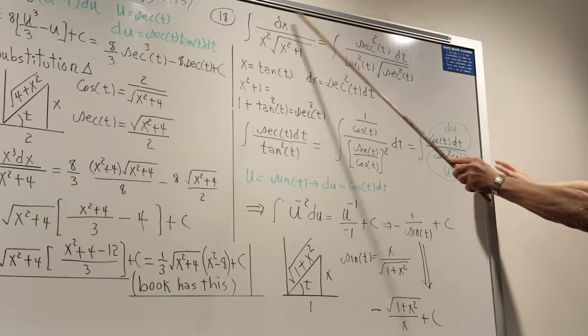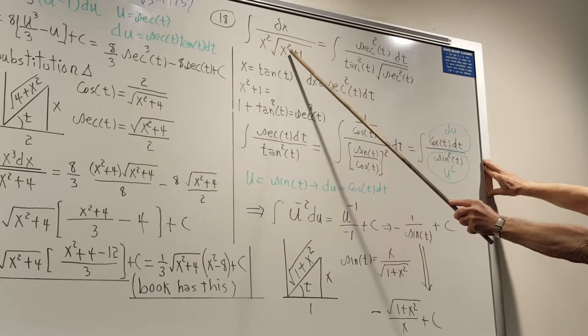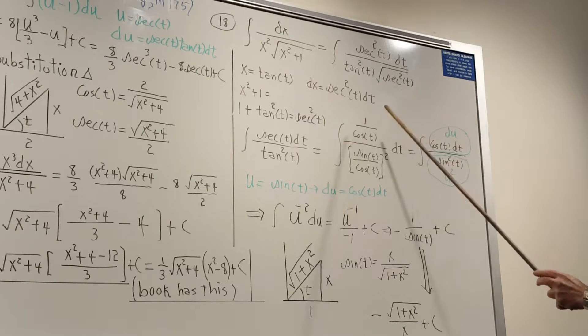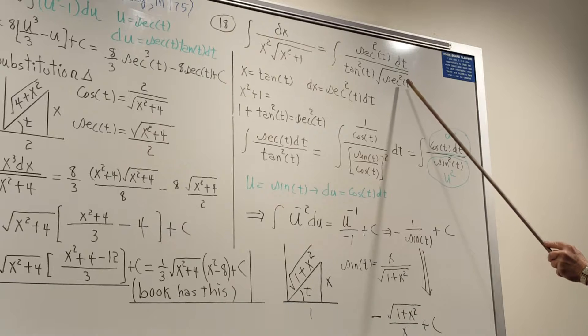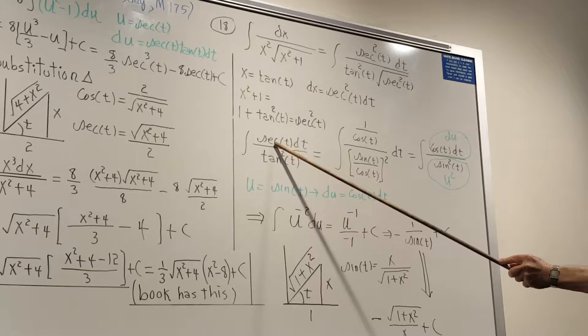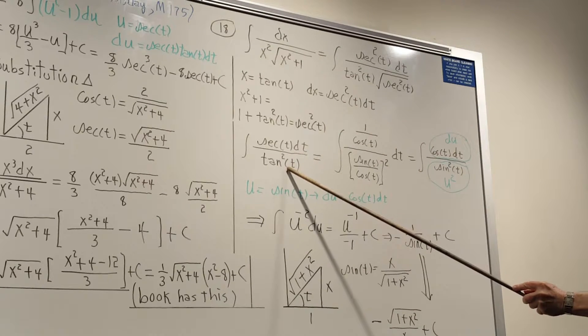So we have secant squared, tangent squared, and then the square root here of secant squared, and so this secant would cancel one of those and leave you a secant on top, and your tangent squared is there.